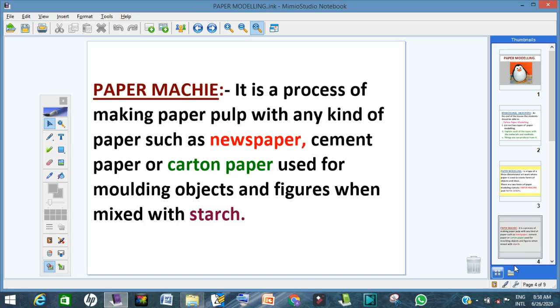What is paper mache? Paper mache is a process of making paper pulp with any kind of paper such as newspaper, cement paper, or carton paper to produce or mold a figure.